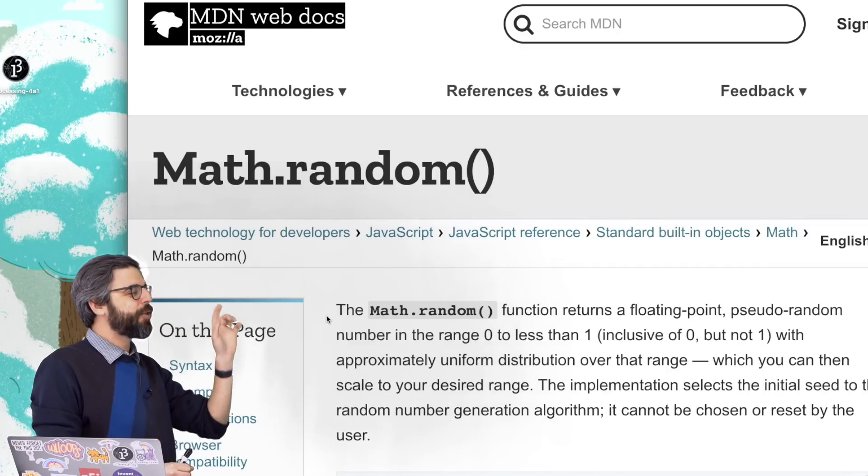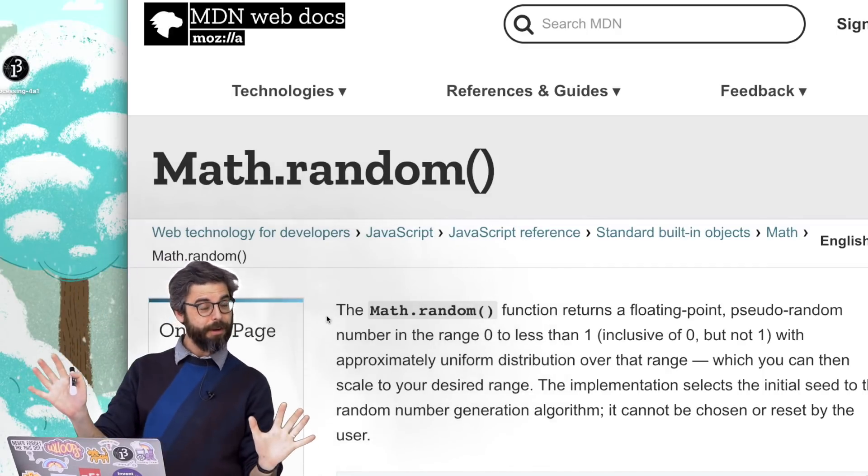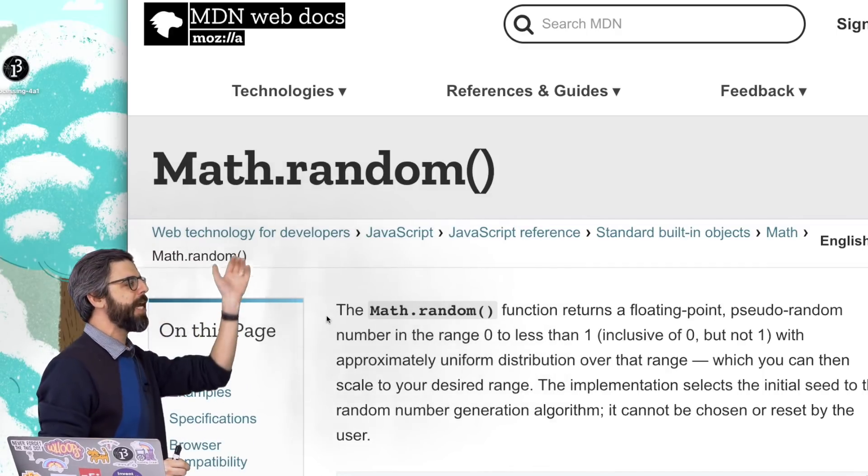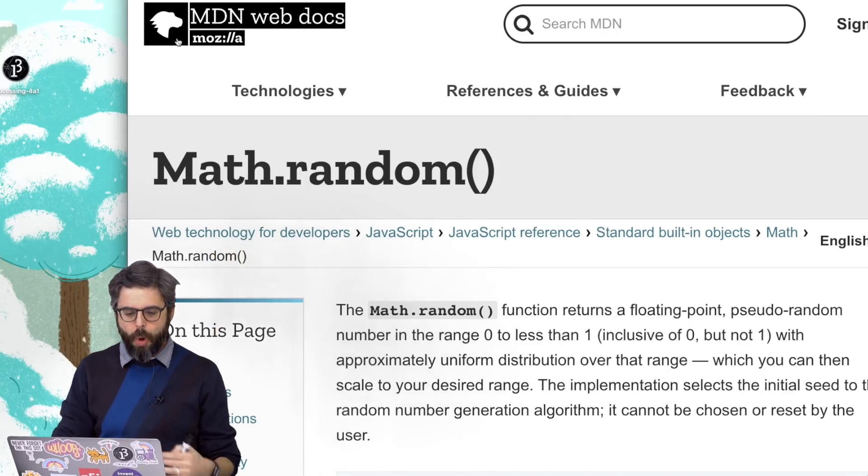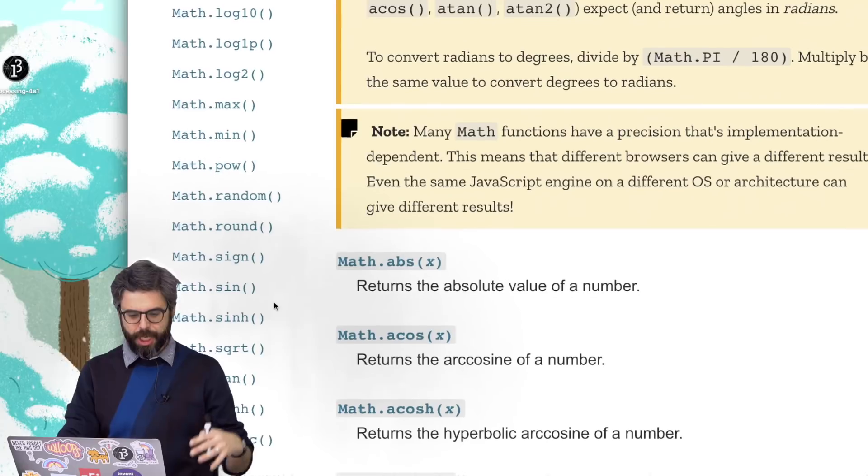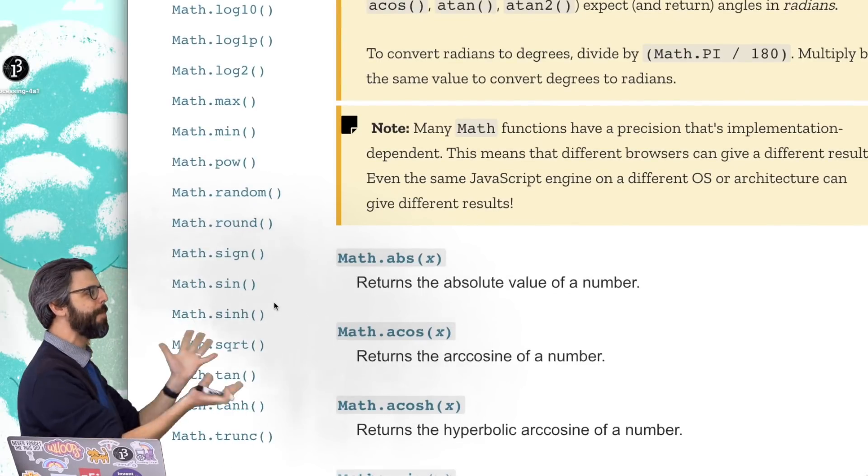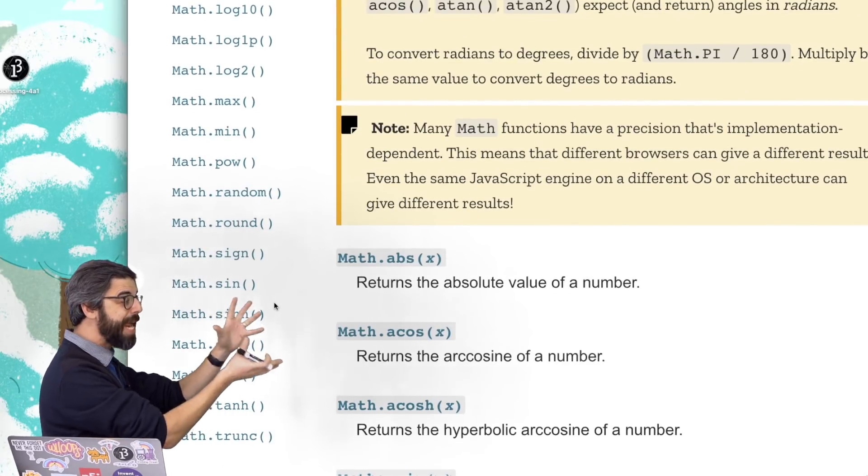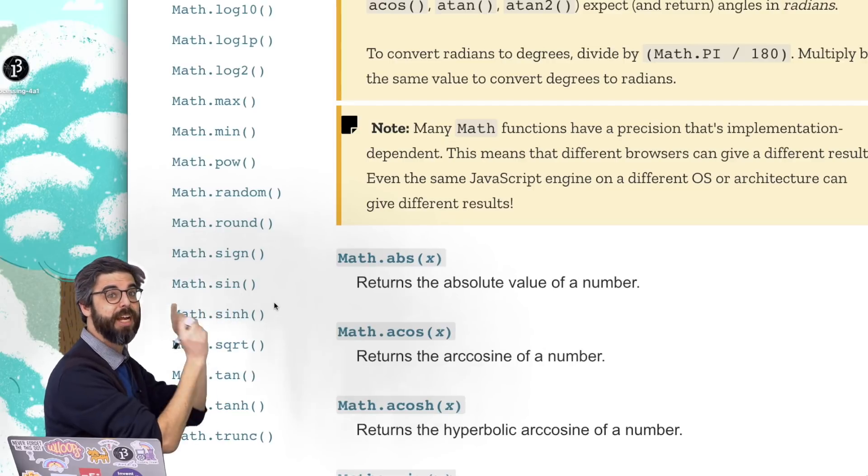For example, in JavaScript, if I wanted to pick a random number and I didn't have p5.js, I would say math.random. And there are a whole collection of functions, mathematical functions, under the umbrella of math. They're namespaced under math. They're all static functions.